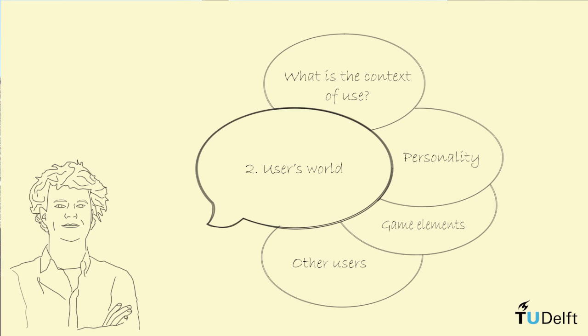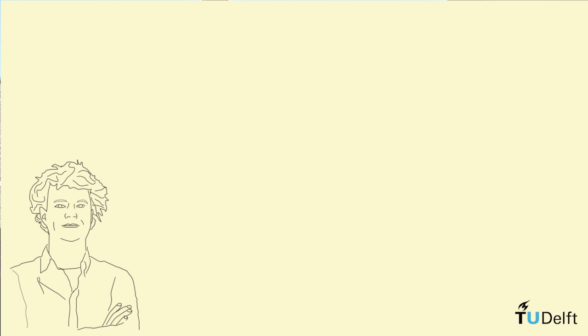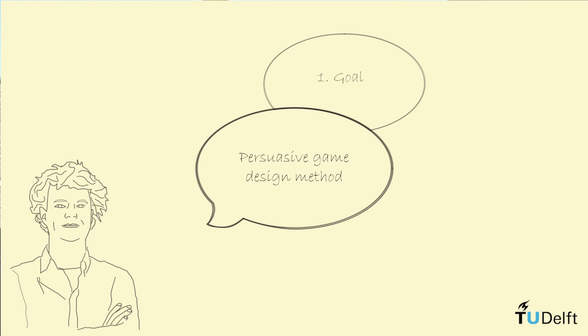The second stage is the user context. You want to investigate what your user consists of. What is his personality? What are the game elements that your users want to use or are motivated by? What is the kind of context of use? When can you insert your product into the daily life of the user? And also, what are the other users around your primal users? For instance, in healthcare, you will never have a patient on its own.